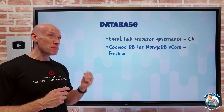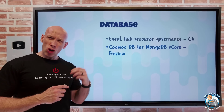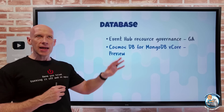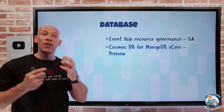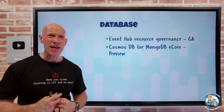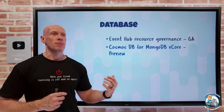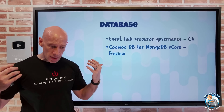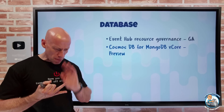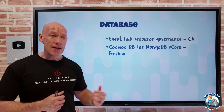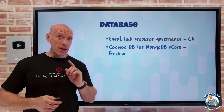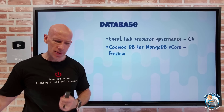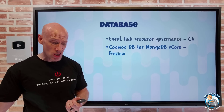Cosmos DB for MongoDB now has a vCore option as an alternative to request units. Request units are great for cloud-native applications, but vCore will be more useful for lift-and-shift scenarios where you're currently using MongoDB and want to move it to the cloud in a managed way. This vCore option will be more familiar and a better fit - it's still managed, but you pay based on number of CPUs, amount of memory, number of nodes, and amount of storage. You can scale out with more instances or scale up, and you don't need to worry about sharding keys until you get into terabytes worth of data.